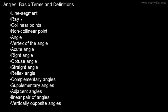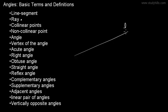A ray is a line with one endpoint. For example, we have one line L and it has one endpoint A. This is called a ray.